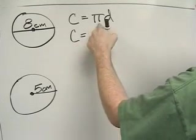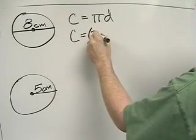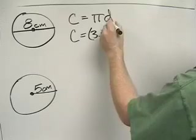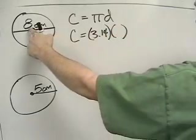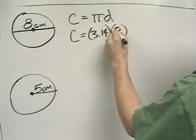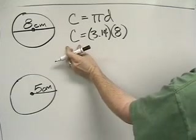I know the value of d. In this problem, d equals 8, so the circumference equals 3.14 times 8. Over here on scratch paper, I'm going to multiply 3.14 times 8.